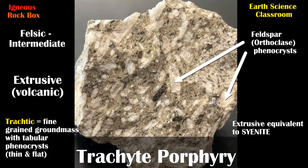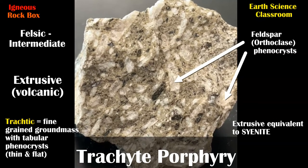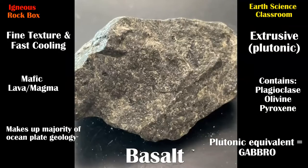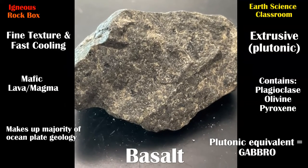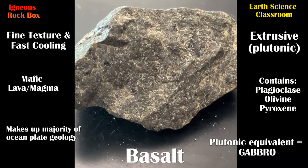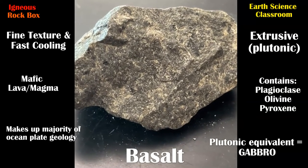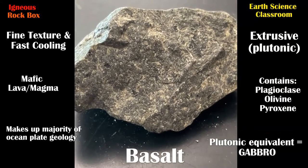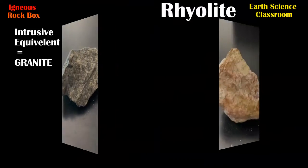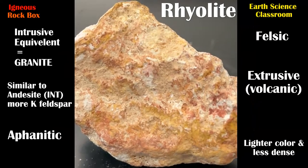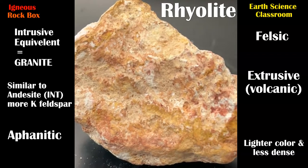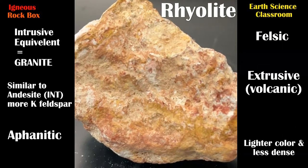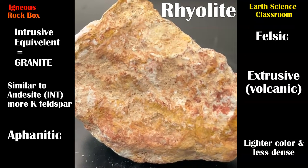This is trachyte, another extrusive igneous rock. Here we have our classic and very common extrusive igneous rock — more mafic — which is basalt, the extrusive equivalent of gabbro. Here is the non-porphyritic, regular rhyolite: an extrusive igneous rock that is the equivalent of granite, formed from cooling lava.